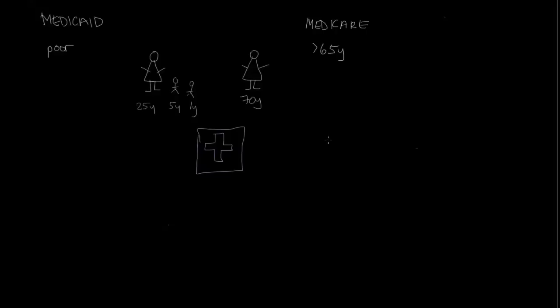Medicare is fairly straightforward. If you are over the age of 65, the federal government, meaning the part of the government based in Washington, D.C., they run the Internal Revenue Service and they run the military, they also run Medicare. They will be responsible for paying any bills that our hypothetical 70-year-old woman has in the course of getting her medical care. So the federal government sends that out, doesn't matter what state this woman lives in, and they assume 100% of the insurance responsibility and the costs for her medical care.